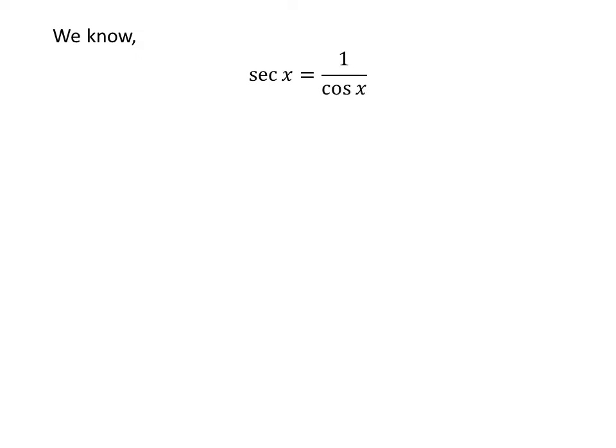We also know 1 upon cosine of x is equal to secant of x. So secant of x is equal to 1 upon minus 4 upon 5, which is equal to minus 5 upon 4.